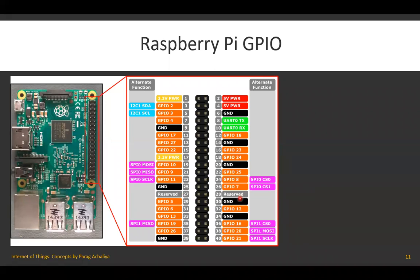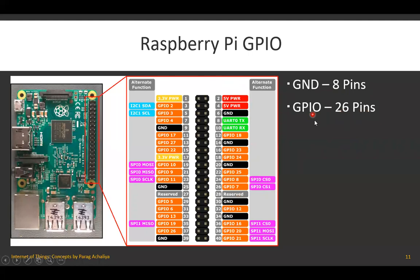This GPIO pin diagram is very important and must be memorized for any IoT application. In summary: the Raspberry Pi has 8 ground pins, 26 GPIO pins, 4 VCC pins (two 5V and two 3.3V), and 2 reserved pins.